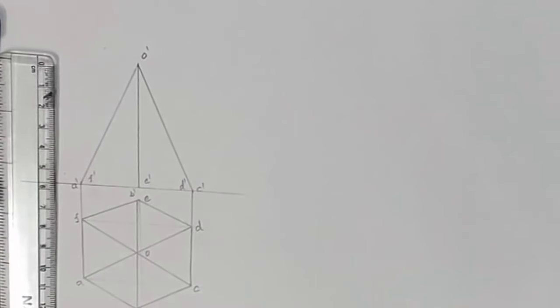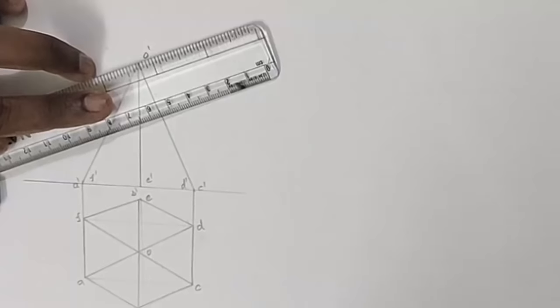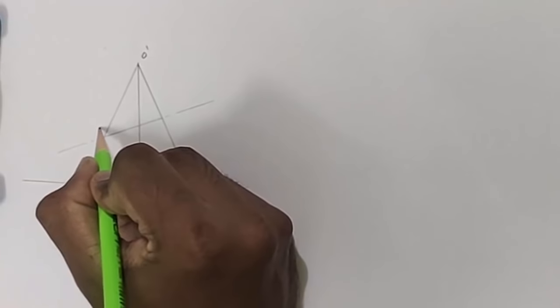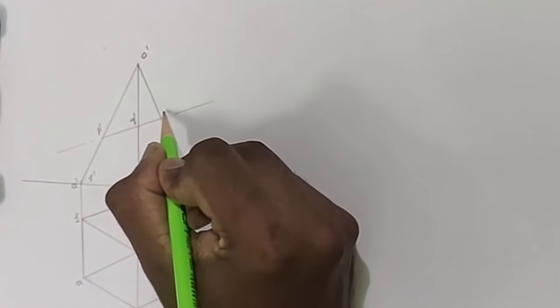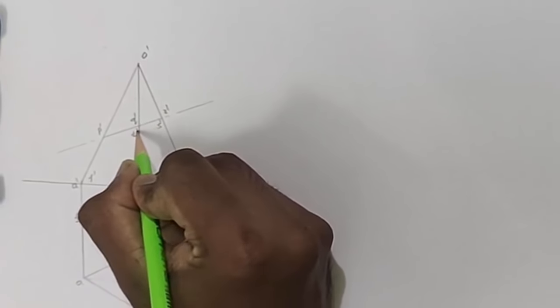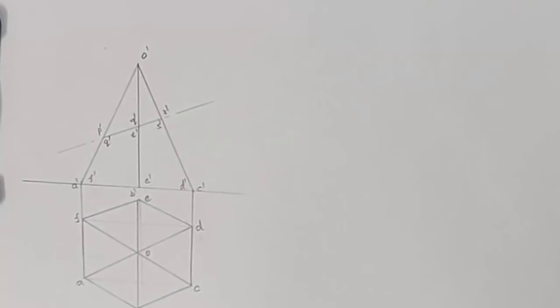Now it is inclined at 40 degrees to HP. So take your protractor and mark 40 degrees and draw the cutting plane. Then mark the cut points: P dash, Q dash, R dash, S dash, T dash, and U dash. Now we have drawn the cut points.